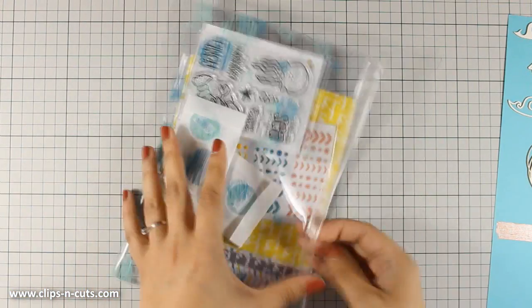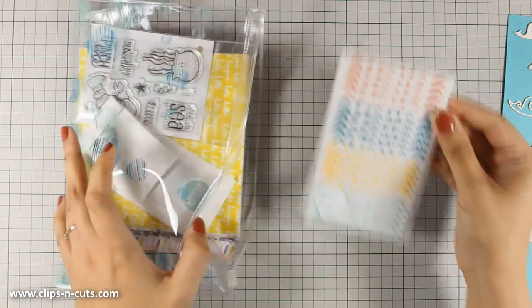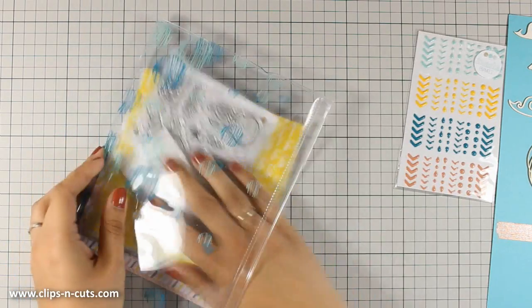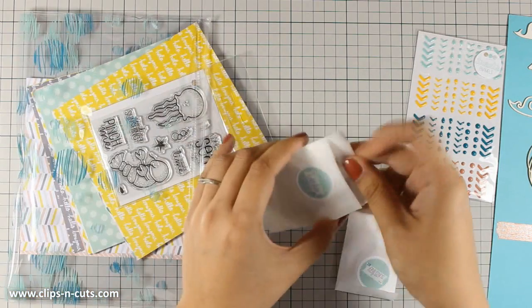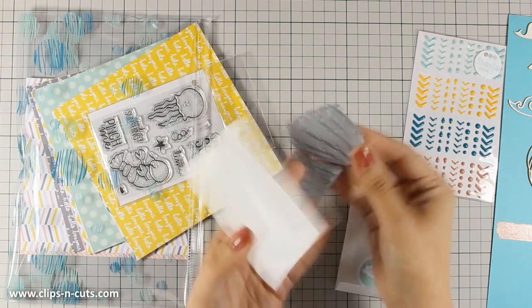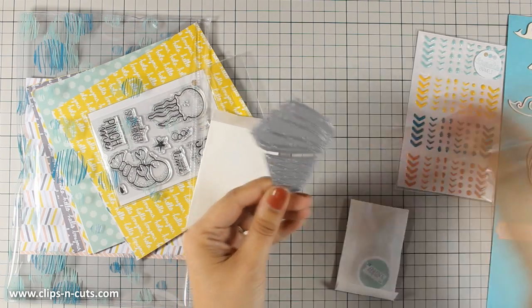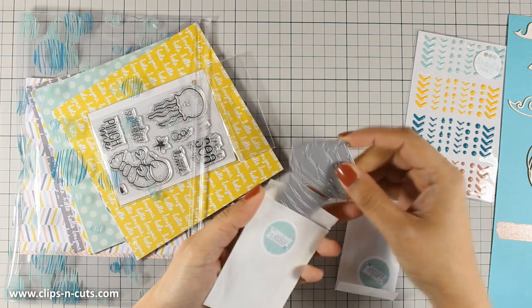There is also a package with enamel dots. The enamel dots come in four different colors with arrows, droplets, circles, etc. And there is also a die. This die actually matches perfectly this die cut, the wood veneer die cut. And it's an ice cream.